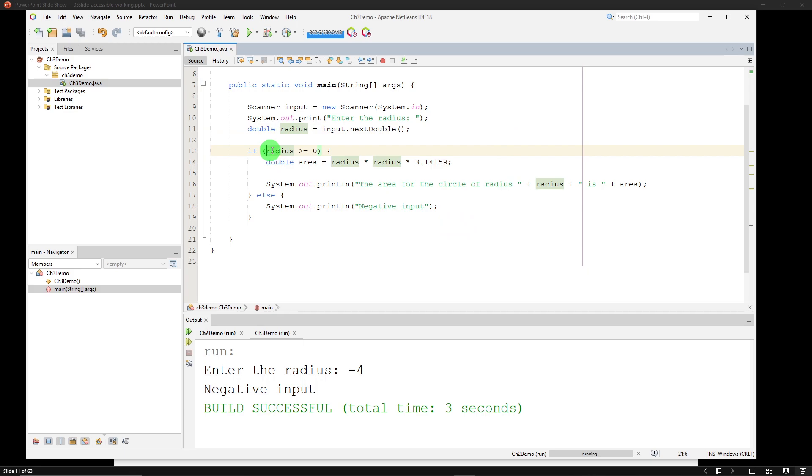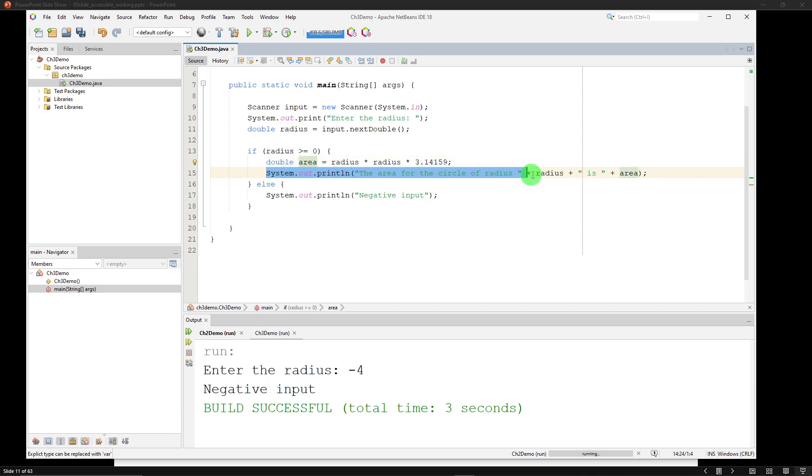And if the radius is greater than or equal to zero, I probably had an extra space in there. We're going to take the radius squared times pi and store that number in area, and we're going to print out to the user the area for the circle of radius, whatever we type in is, and then we're going to print the area. We've seen that part before.